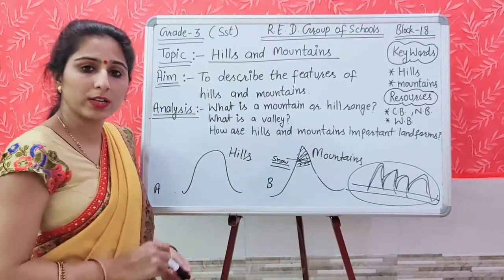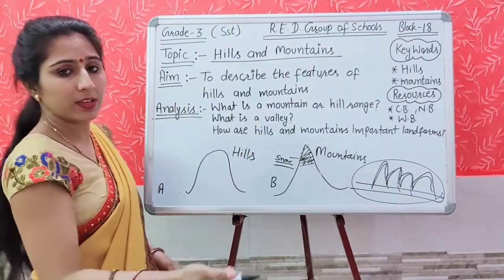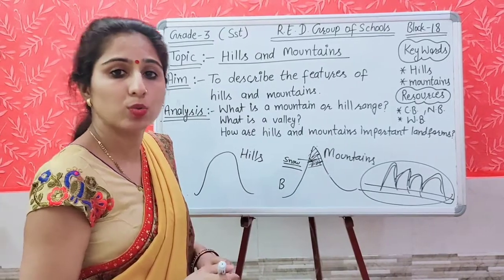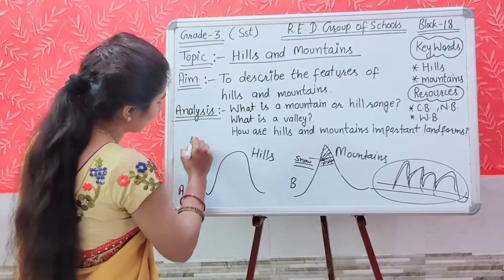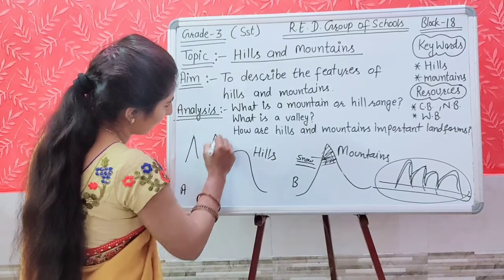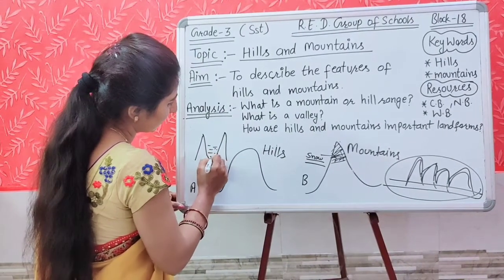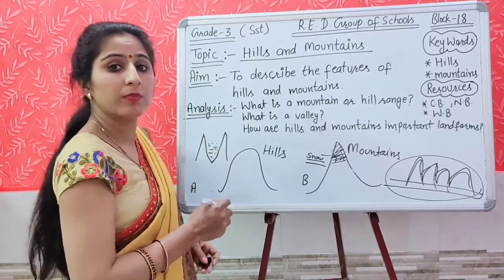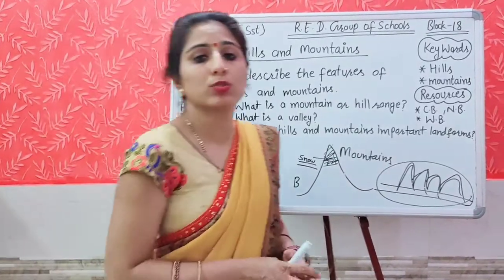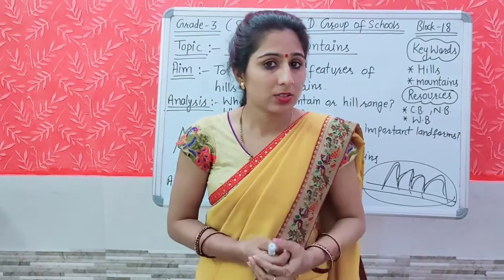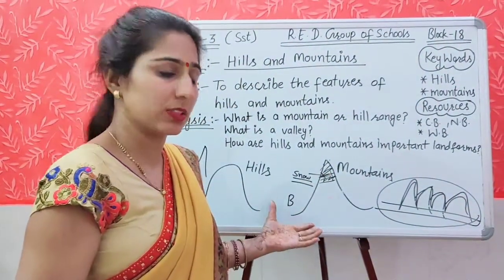What is a valley? The lowland area between two mountains or hills is called a valley. Like if two mountains are there, the lowland area between them is called the valley. Many rivers flow through these valleys, and these rivers are originated from the melting snow of the mountains.